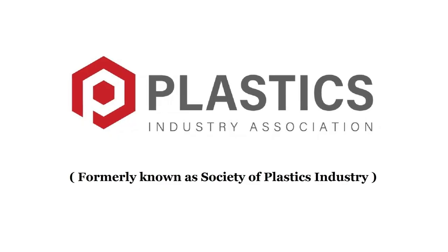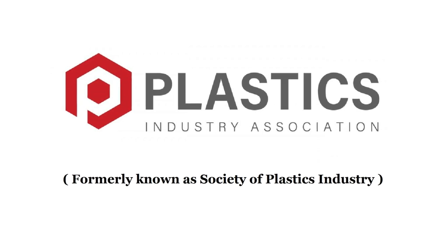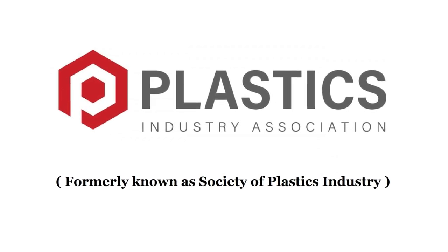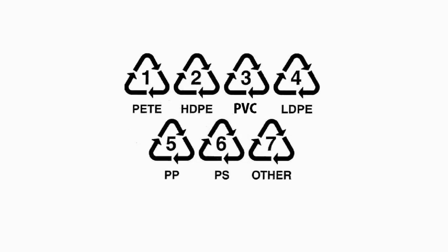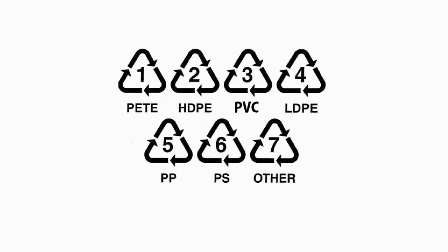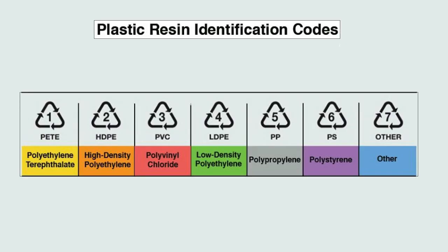Understanding the different types of plastics can help consumers take informed decisions related to health and environment. SPI code is used to classify different types of plastics. RIC works as a tool to assist in sorting plastics. SPI is also known as Resin Identification Code.